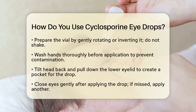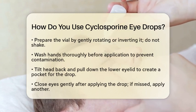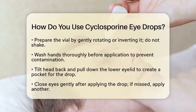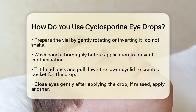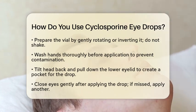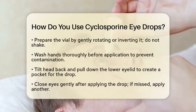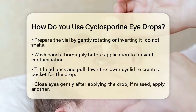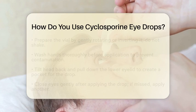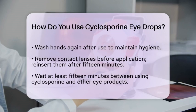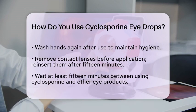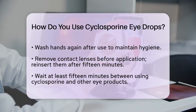Now, let's go through the application process. Start by washing your hands thoroughly to prevent any contamination. Next, tilt your head back slightly and pull down your lower eyelid to create a small pocket. Carefully drop the medication into this pocket. After applying the drop, close your eyes gently without blinking. If you happen to miss a drop, you can apply another one. Once you are done, wash your hands again to maintain hygiene.